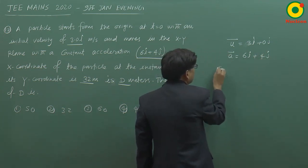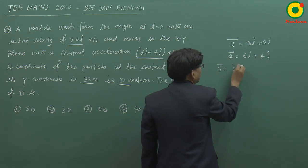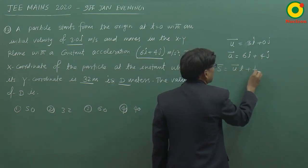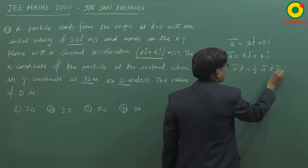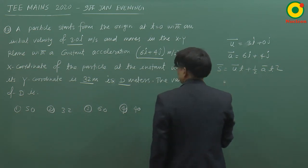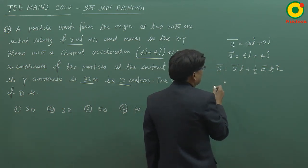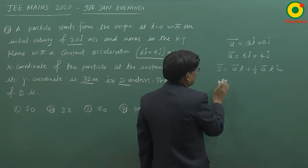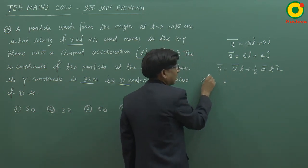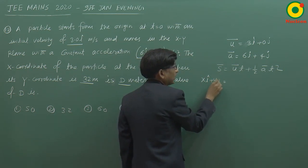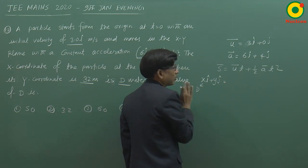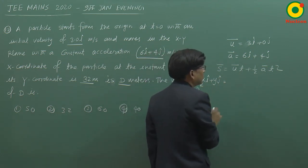Displacement hoga ut plus half a t square. Yahan dekhenge ki jo s hai, s ko aise bhi likh sakte hain: x i cap plus y j cap. Isme x ka value woh d hai jo hamein pata karna hai, y 32 diya hua hai.